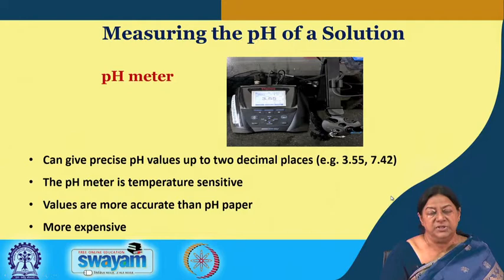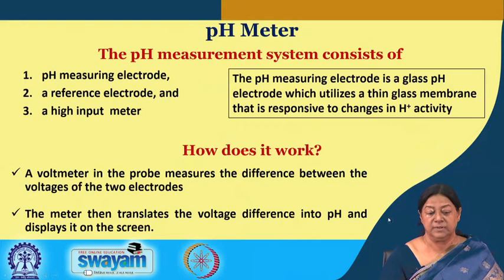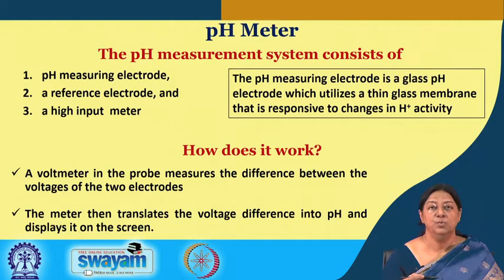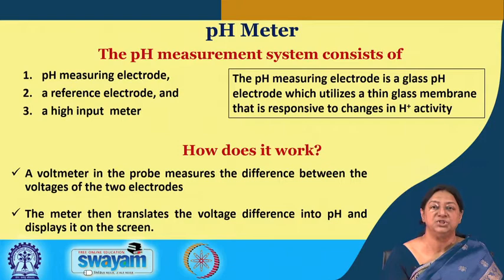We use a pH meter — its use will be demonstrated. It can give precise pH values to even 2 decimal places, which is sometimes required for biochemical reactions. The pH meter is temperature sensitive and gives values much more accurate than pH paper, though it is more expensive. The pH measurement system consists of a pH measuring electrode, a reference electrode, and an input meter. The glass pH electrode uses a thin glass membrane responsive to changes in hydrogen ion activity. A voltmeter in the probe measures the voltage difference between the two electrodes, and the meter translates this into a pH value displayed on screen.